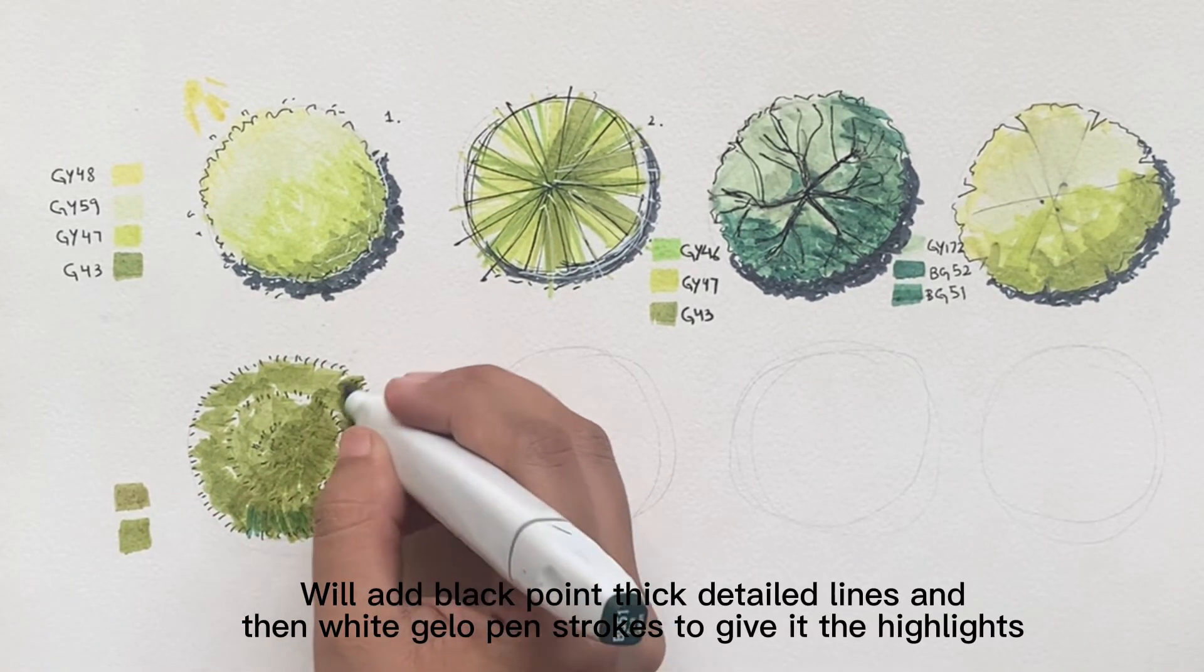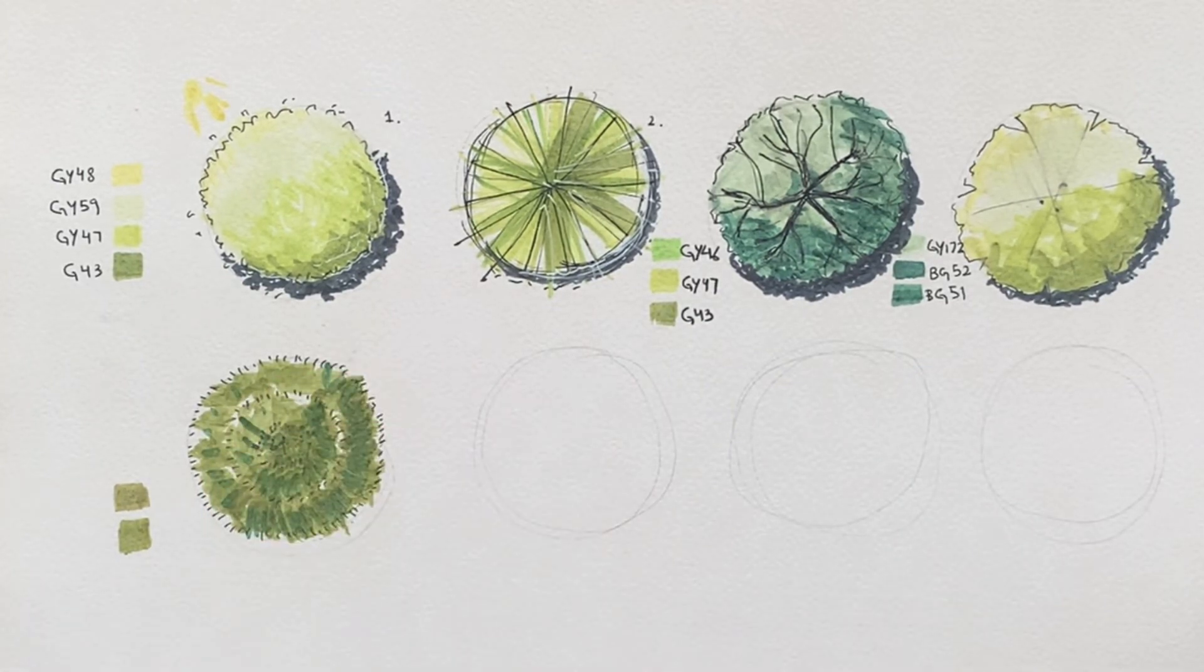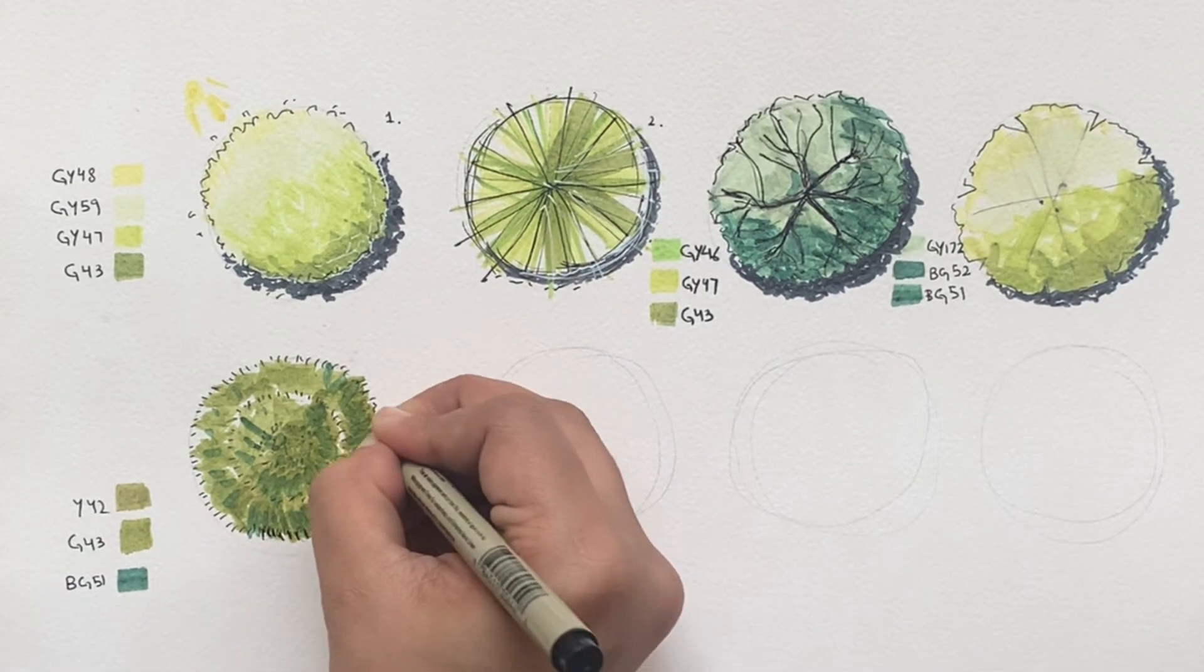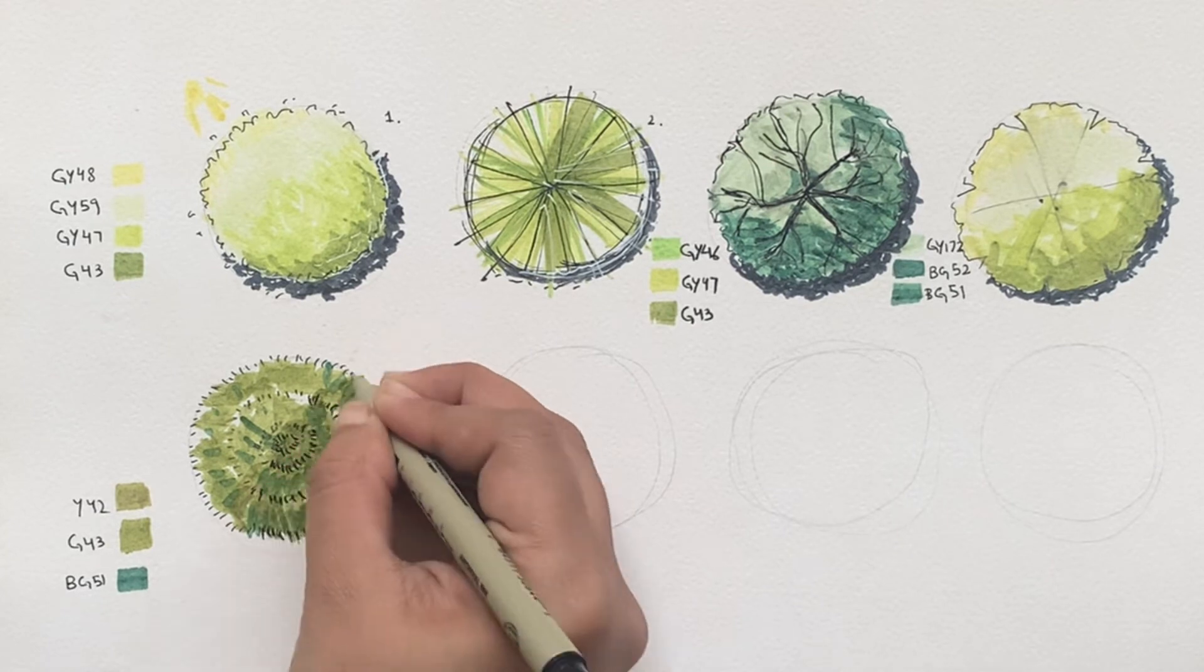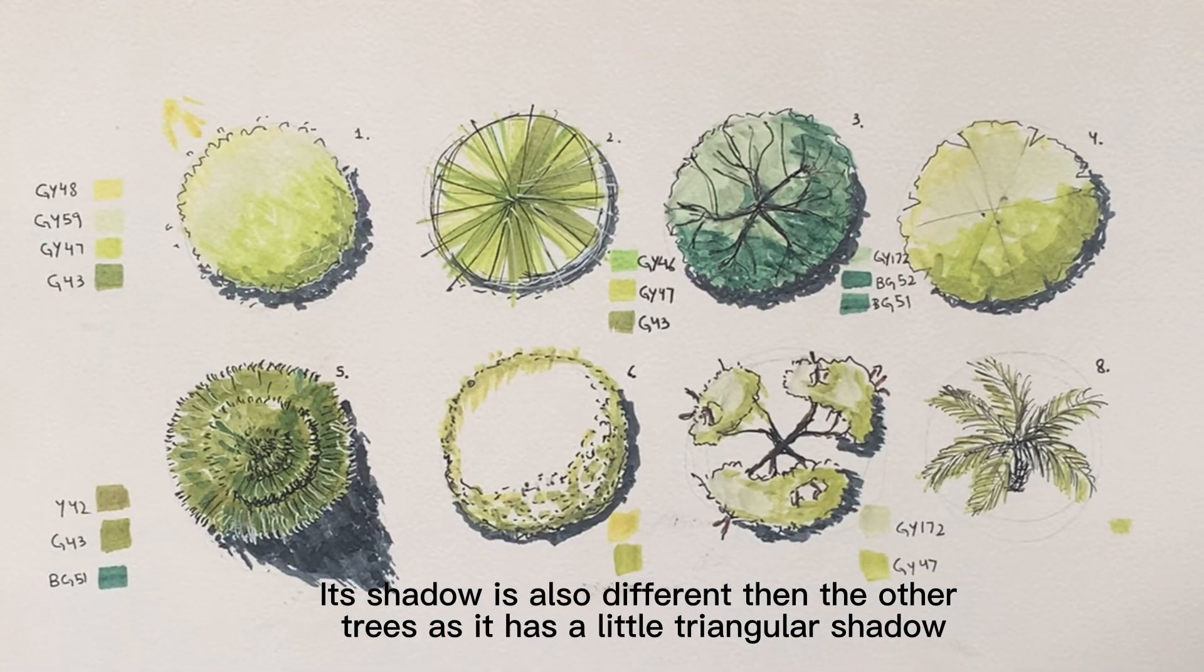We'll add black pointer thick detailed lines and then white gel pen strokes to give it the highlights. Its shadow is also different than the other trees as it has a little triangular shadow.